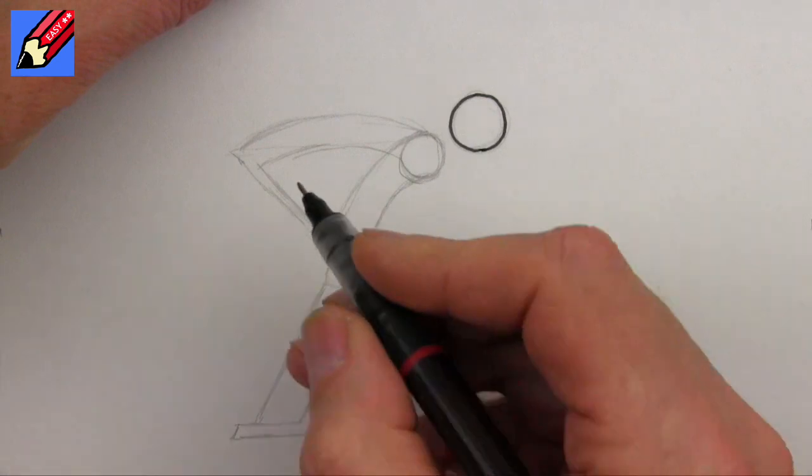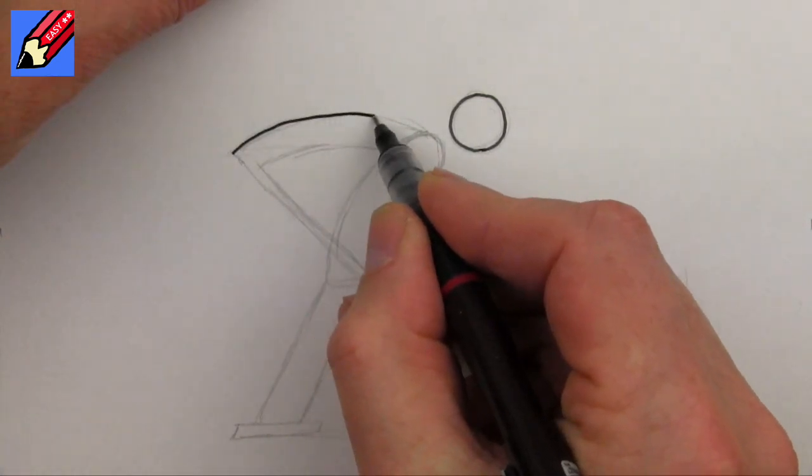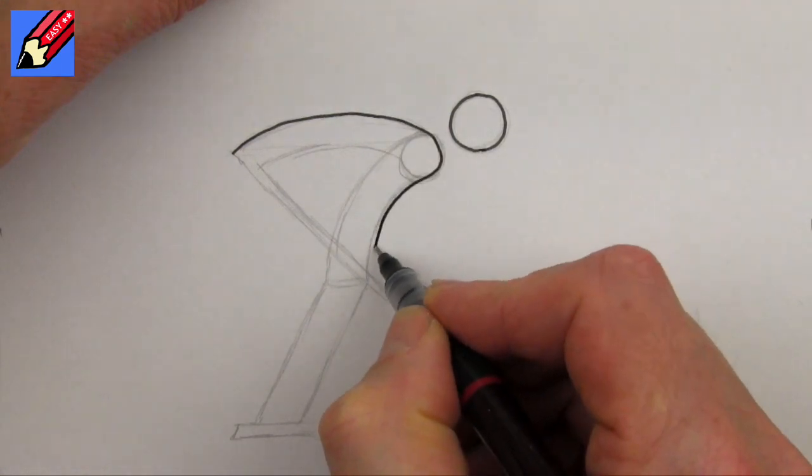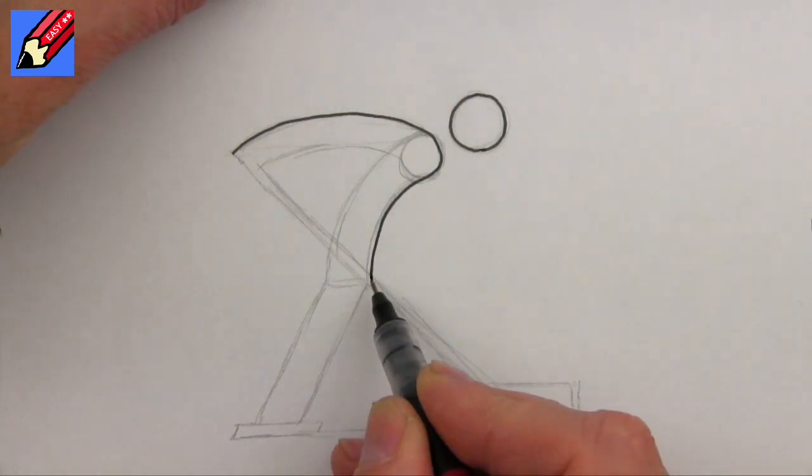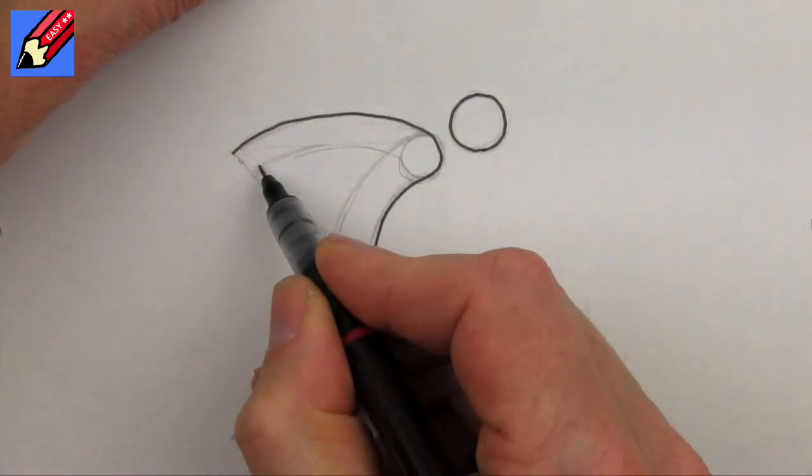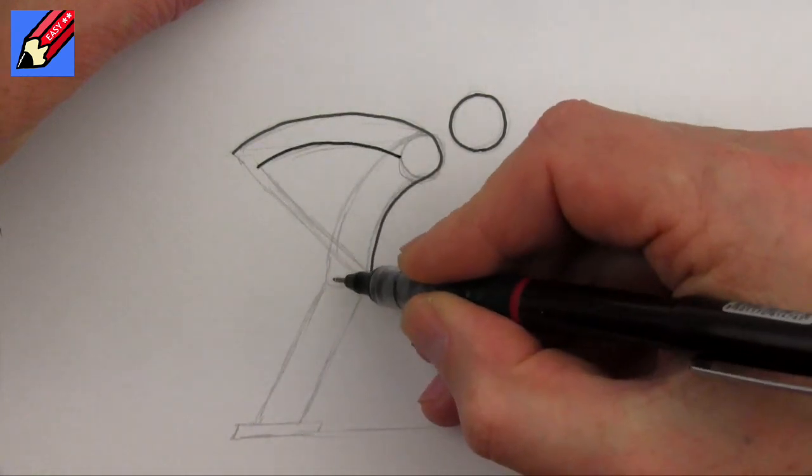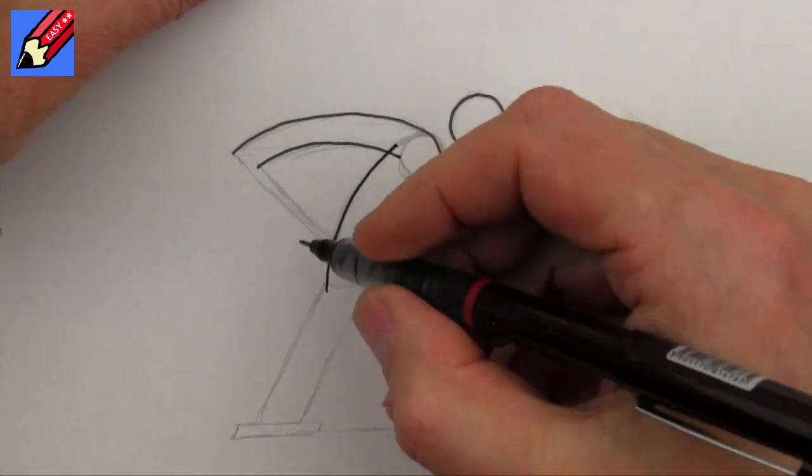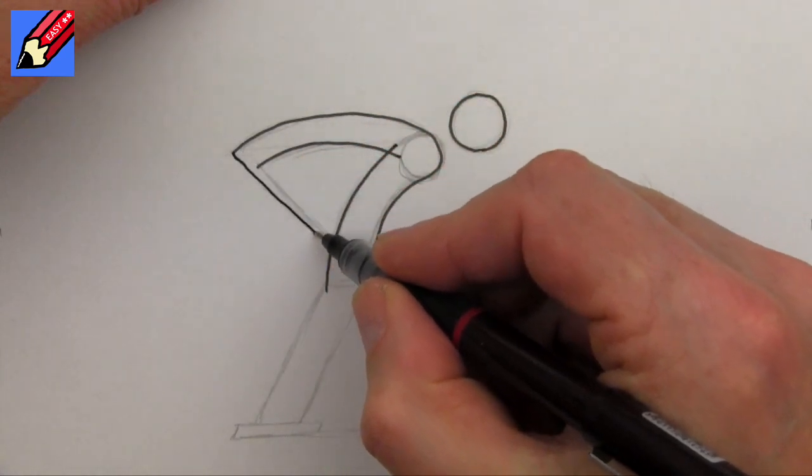Because then it's easy to erase afterwards. Now let's bring that around there, and it's going to come around the shoulder and then down to the body. Now it doesn't matter that I'm going over the line there because I'm going to fill that in in a minute. Let's see if we can get a reasonably straight line through here.